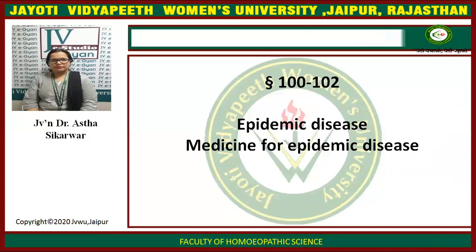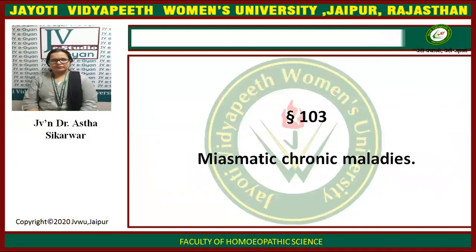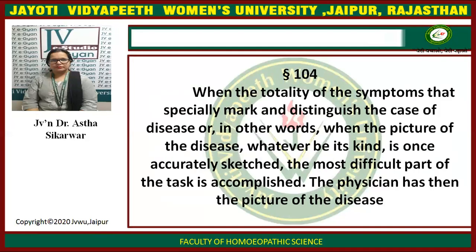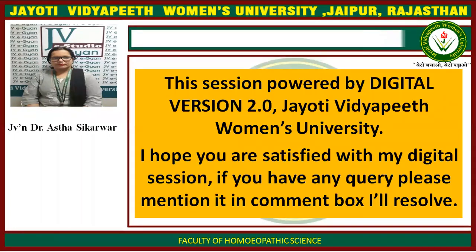Aphorism number 100 and 102: epidemic diseases — medicine for epidemic diseases. Epidemic disease is one type of acute disease; in epidemic conditions we give genius epidemicus. Aphorism 103: miasmatic chronic maladies are chronic diseases. Aphorism 104: when the totality of the symptoms that specially mark and distinguish the case of disease — in other words, when the picture of the disease, whatever be its kind, is once accurately sketched — the most difficult part of the task is accomplished. The physician then has the picture of the disease. This is all about case taking in homeopathy.